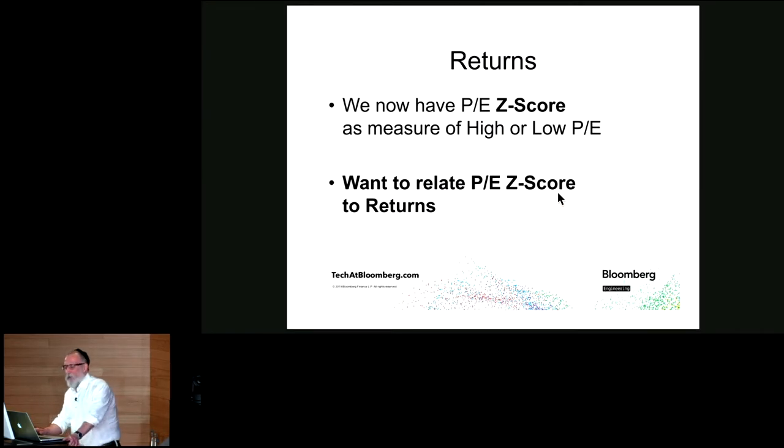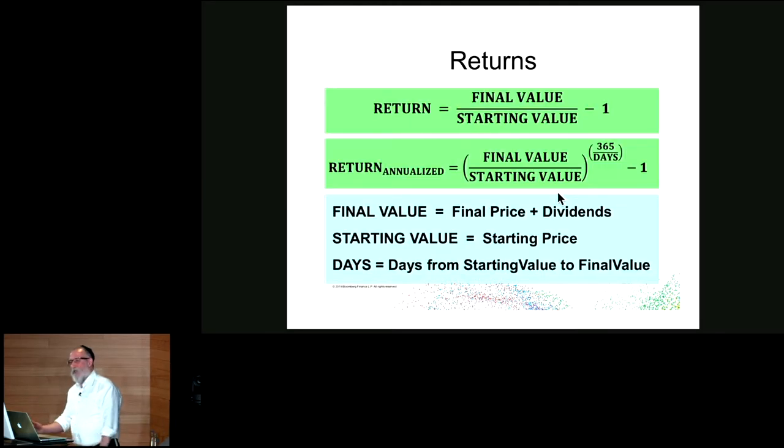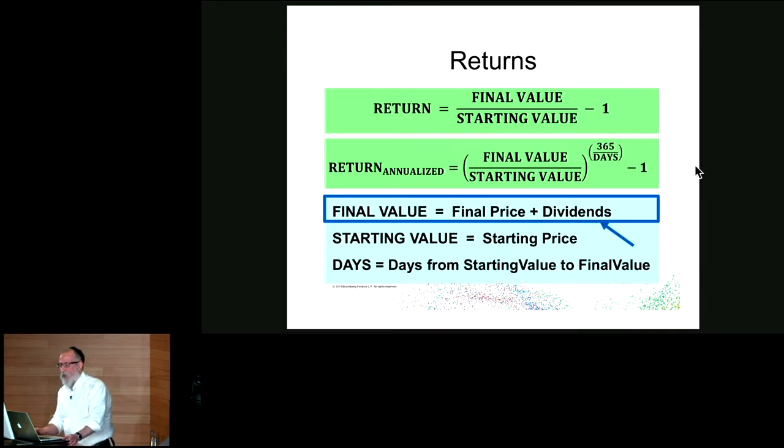Now we need to calculate returns. We can relate the returns to the z-score, where return is final value divided by starting value minus 1. And if I want to do returns for different periods of times, I might want to annualize it, so I can use this formula. The important thing to note here is that the final value is the final price plus any dividends that were earned during the period over which I'm calculating return.